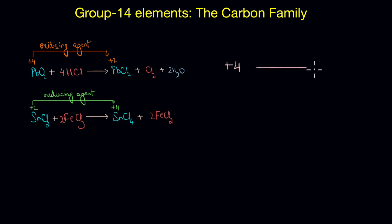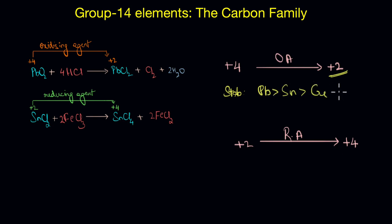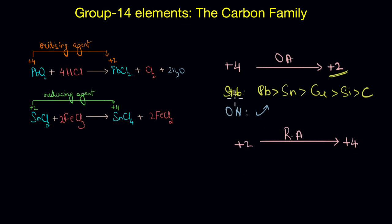To summarize: we saw two types of reactions of group 14 elements — one in which the element changes from plus 4 to plus 2 oxidation state and thereby acts as an oxidizing agent, and another in which it goes from plus 2 to plus 4 and thereby acts as a reducing agent. This change can only happen if the element attains a more stable oxidation state. The oxidizing nature depends on the stability of the plus 2 oxidation state, which follows the order: Pb > Sn > Ge > Si > C. So the oxidizing nature of group 14 elements is also in that same order — lead is most oxidizing and carbon is the poorest oxidizing agent.